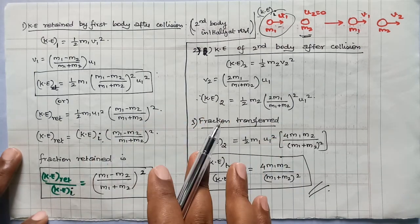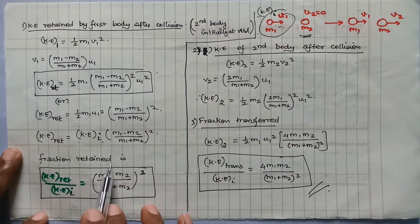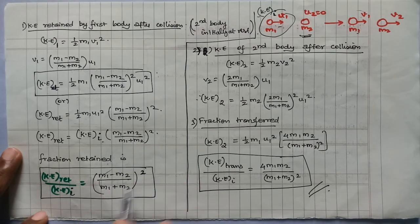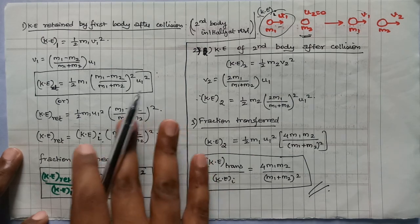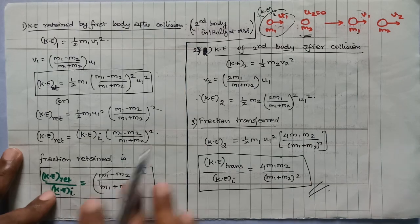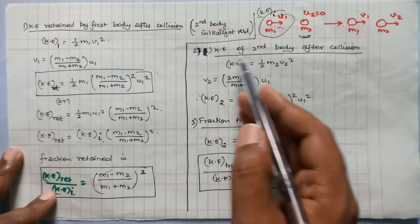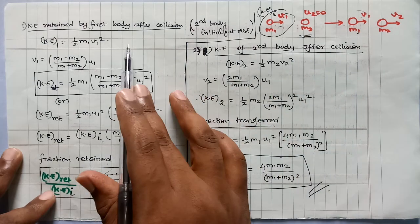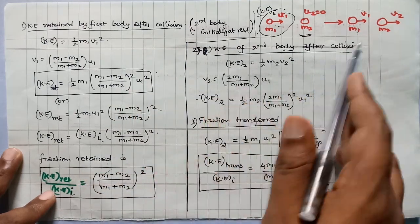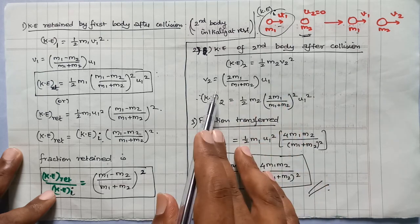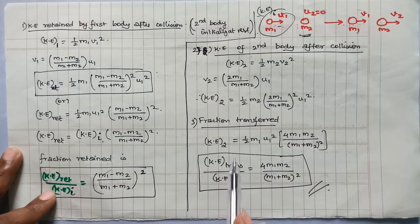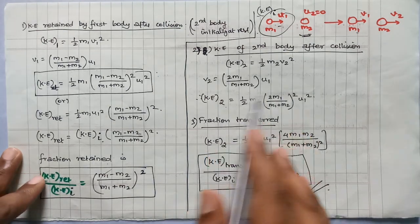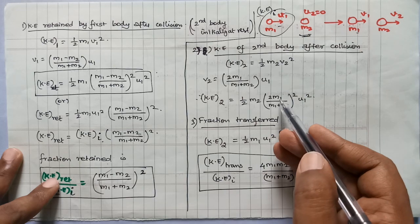Directly from the question, for the kinetic energy of the first body, you can substitute values. Now for the second body after collision: the KE of the second body is half M2 V2 squared. Substituting V2 equal to 2M1 by M1 plus M2, multiplied by U1, the kinetic energy of the second body after collision is half M2 times 4M1 squared by M1 plus M2 whole squared, into U1 squared.